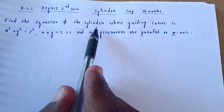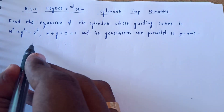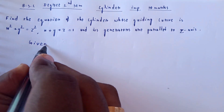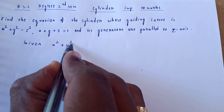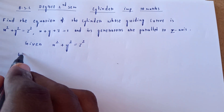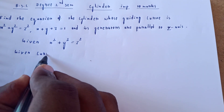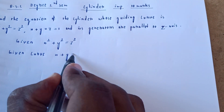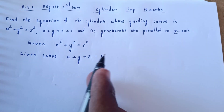Find the equation of the cylinder. The given conditions are: first, x² + y² = z²; and the guiding curve is given as x + y + z = 1.